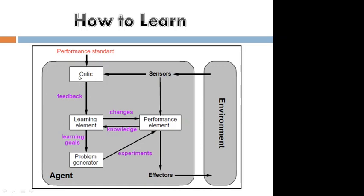The critic gives the performance standard — is it good or not? It gives feedback based on the data. If it is okay, then no problem. If it is not okay, it changes the performance element and generates new problems. So simply: using sensors to observe the environment, doing the performance based on knowledge; if okay, no problem; if not okay, change the performance element.